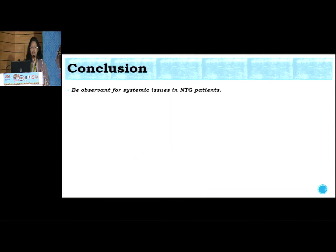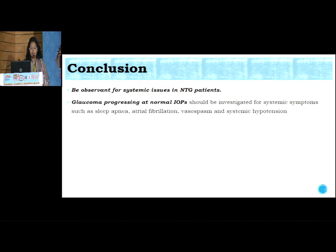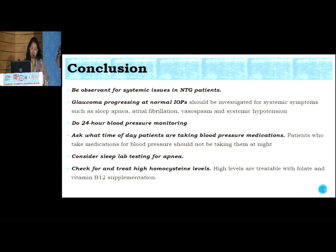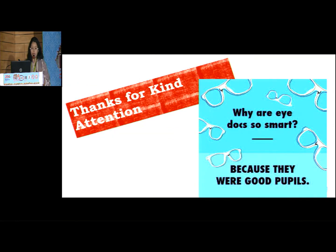To conclude, we need to be very observant whenever a glaucoma patient is progressing despite controlled intraocular pressure. We can think about sleep apnea, atrial fibrillation, vasospasm, and systemic hypotension. We need to do 24-hour blood pressure monitoring and ask at what time of day patients are taking their blood pressure medication — if at bedtime, in consultation with the internist we can shift medications to morning. We should consider sleep lab testing for apnea when required, check high homocysteine levels which can be easily treated, and check concomitant medications to avoid interactions and side effects. Thank you so much for your kind attention.